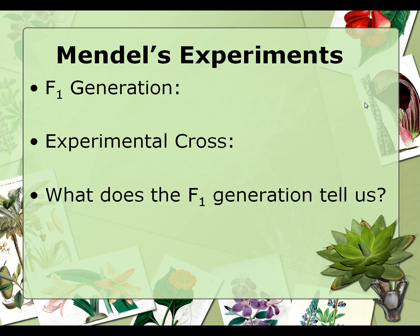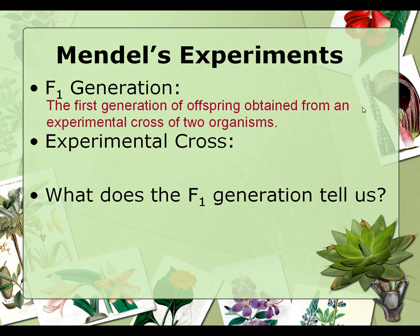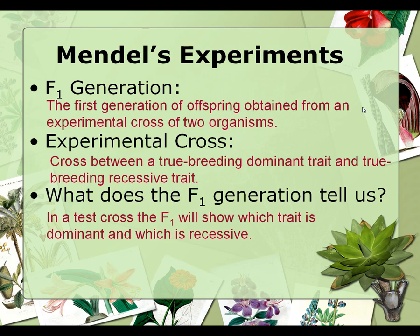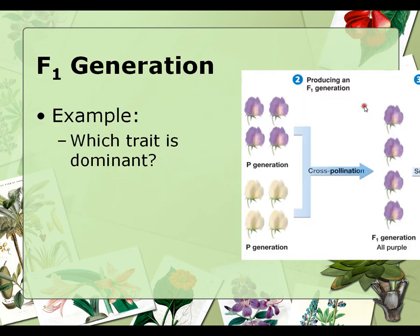He bred the purple flower and the white flower together. The first generation of seeds is called the F1 generation. The F stands for filial, which is kind of like family, so the first generation. The F1 generation tells us which trait is dominant and which trait is recessive. The P generation purple plants were cross-pollinated with the P generation white-flowered plants, and all of the F1 generation were purple, which means the purple trait is dominant.